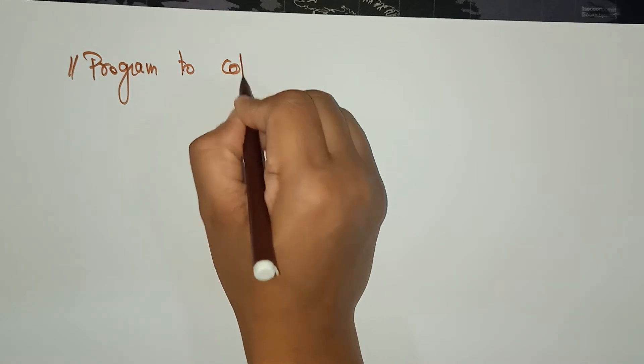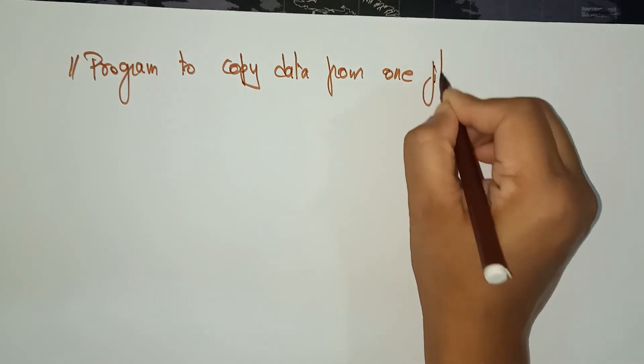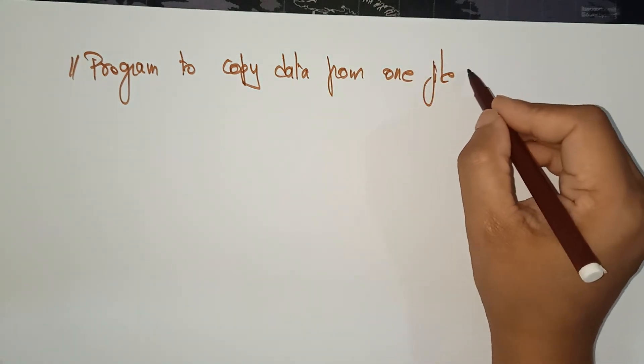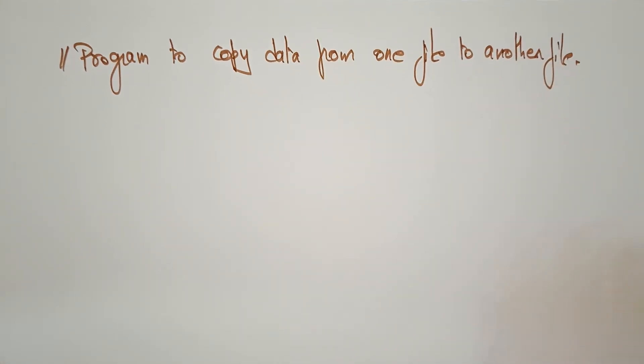Hi students, let's continue with the previous video. In the previous video I covered a task — the steps we need to follow to develop a task, and the methods and constructors required. Before watching this video, please watch the previous video for continuity. Now I'm writing a program step by step, and I'm going to explain each step. The program is about copying data from one file to another file using streams.